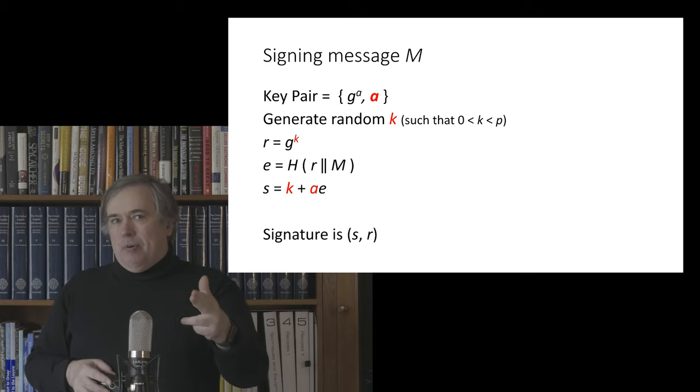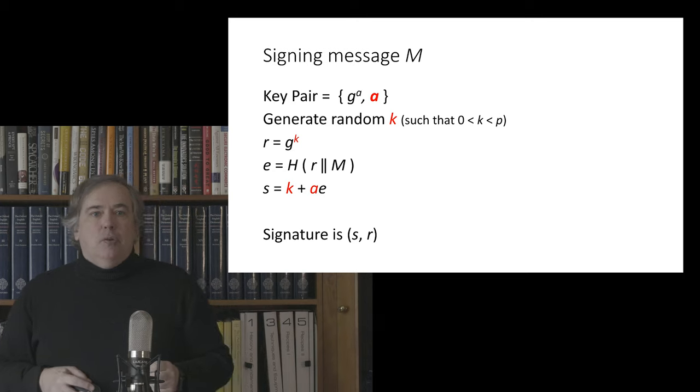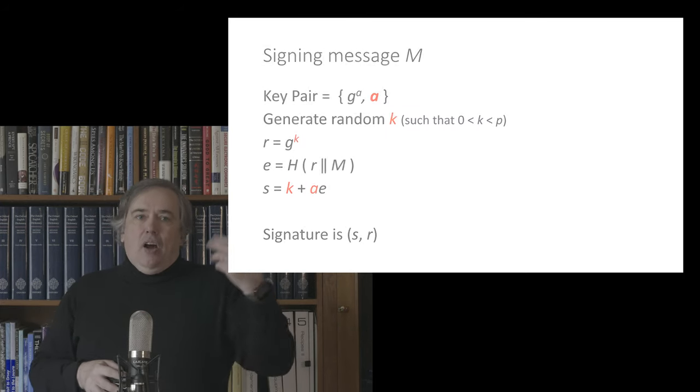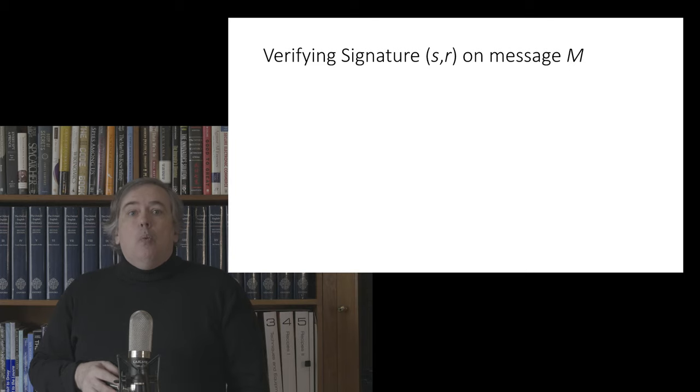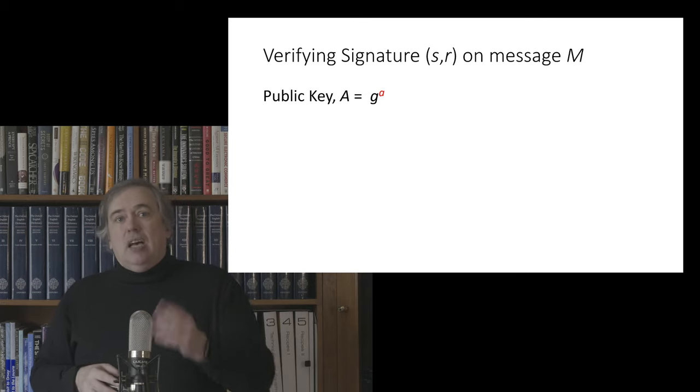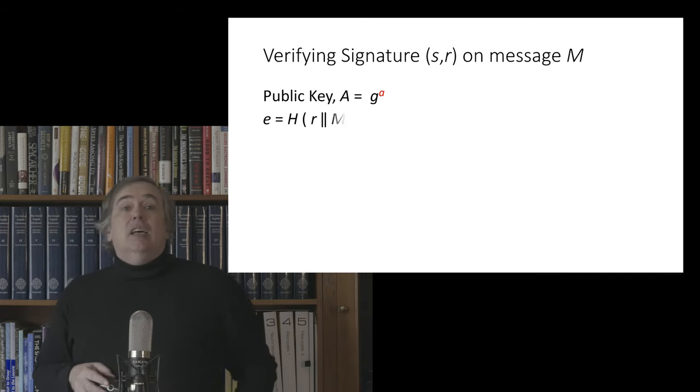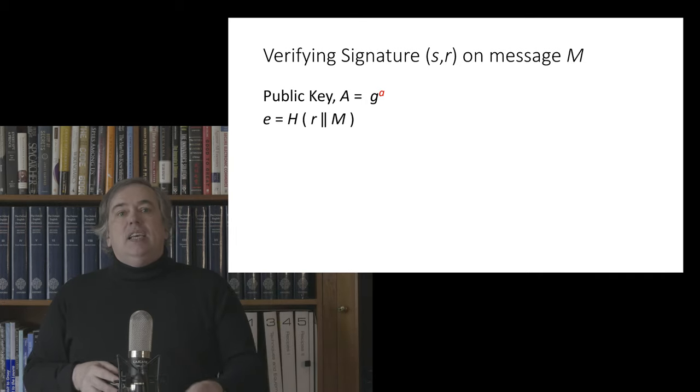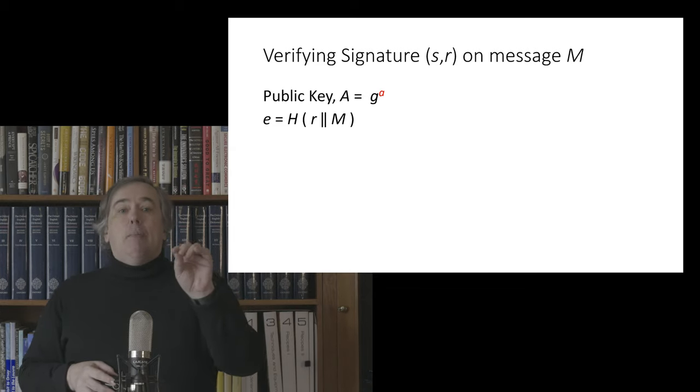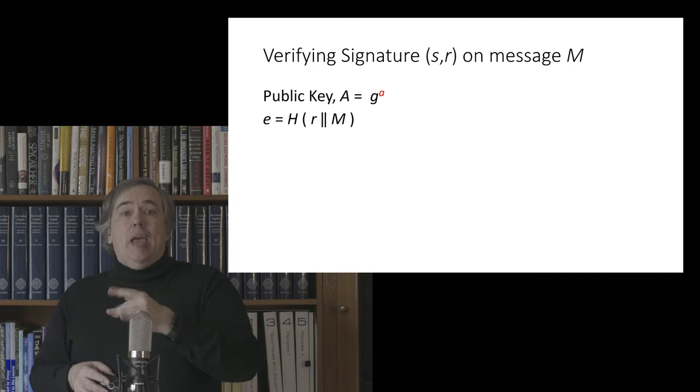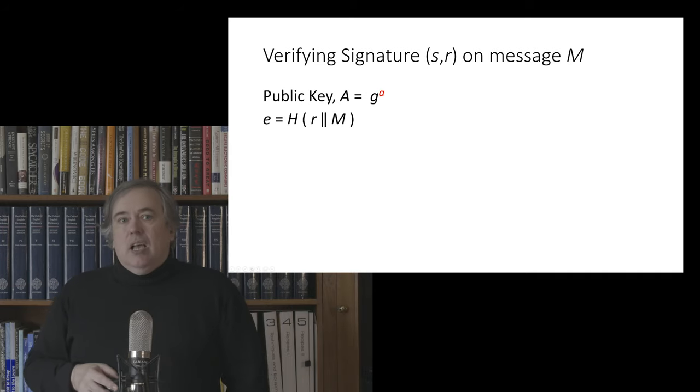Okay, so that's signature generation. How do we verify a signature? Well, the verifier is going to have the signature value, which is s and r, and also needs the message to be verified. First thing they're going to do is they're going to calculate that value e by putting r and M through the same principled one-way function. So Bob, Carol, whoever calculates e.